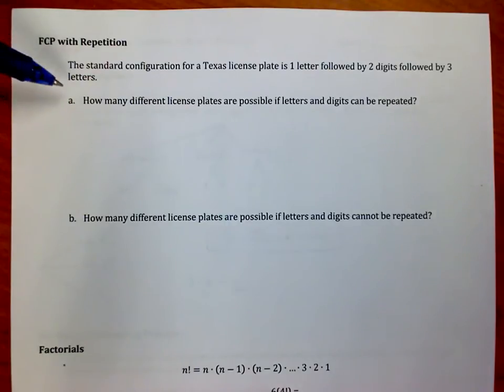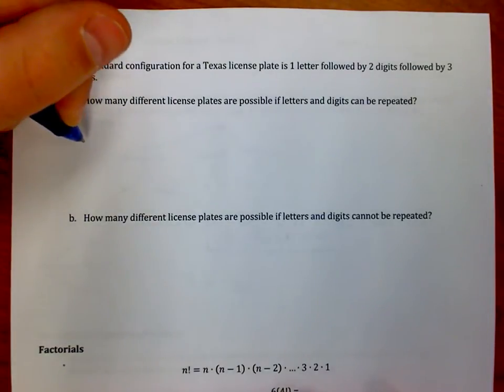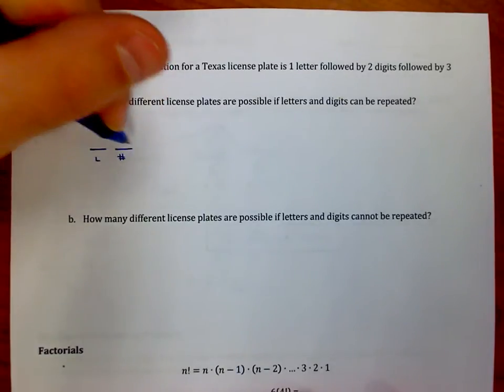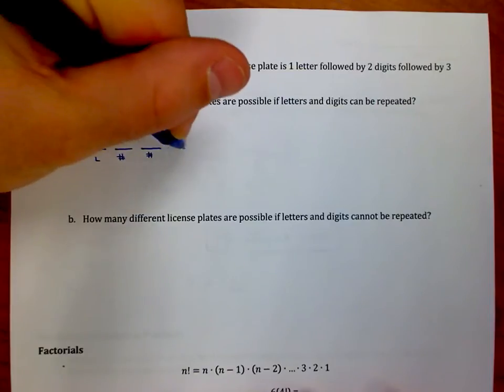So here's a problem. The standard configuration for a Texas license plate is one letter followed by two digits followed by three letters. If I was going to map it out just to draw a picture for myself, I have a letter here, two digits, so two numbers, and then three letters.